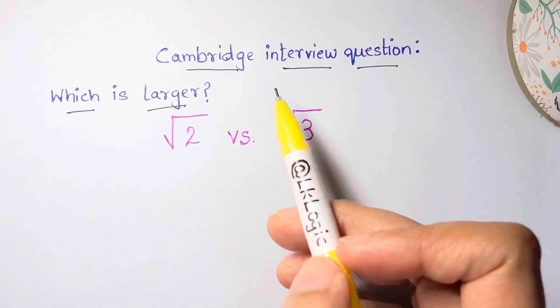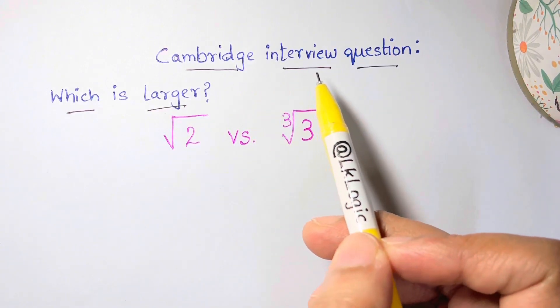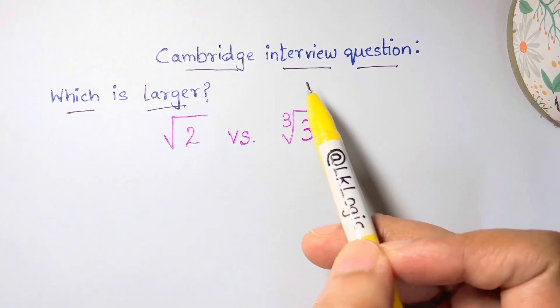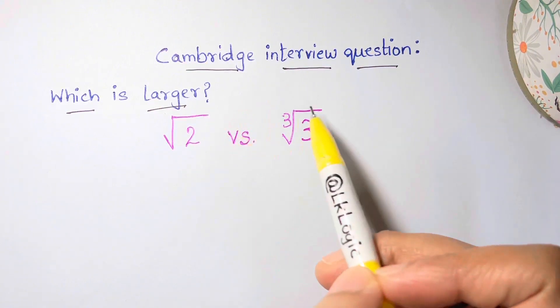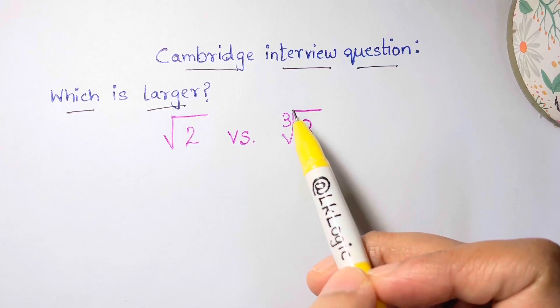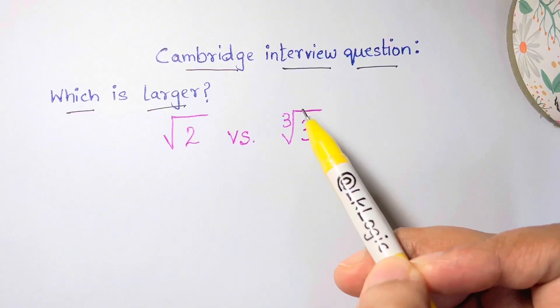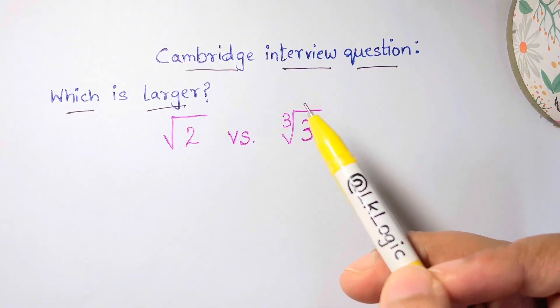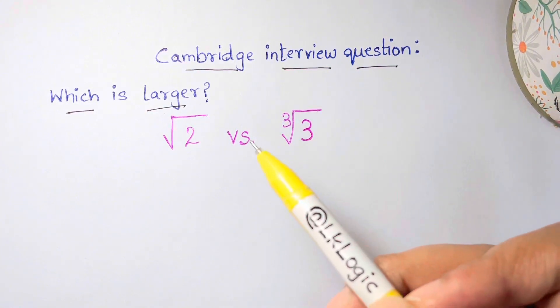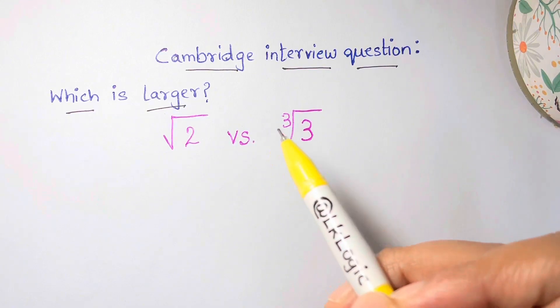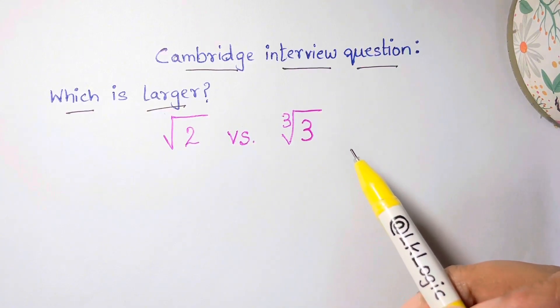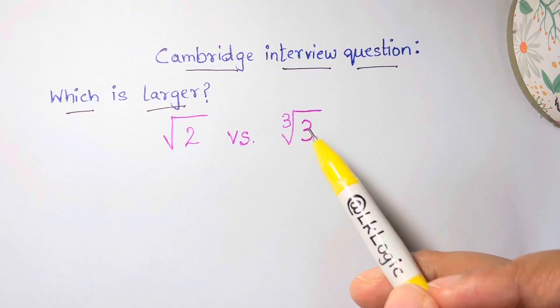You might wonder why Cambridge interview questions are so easy. They might look innocent, but the interview itself is not as easy as it seems. All the tools you have are a few sheets of paper and a pen, obviously no calculators. Also, interviewees are required to present the answer verbally. Only those who can think aloud, as in thinking about the problem and speaking out their thoughts at the same time, stand a chance and get an offer.